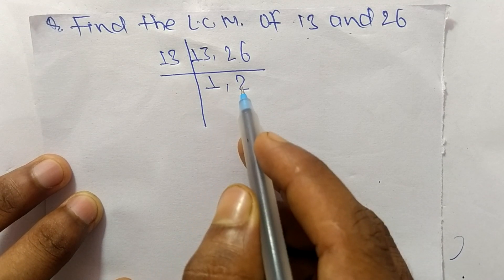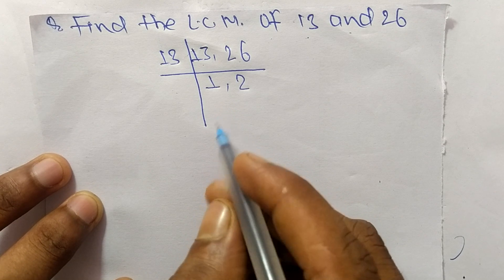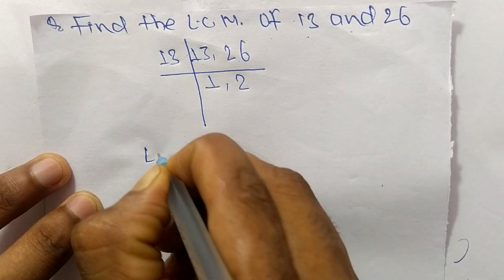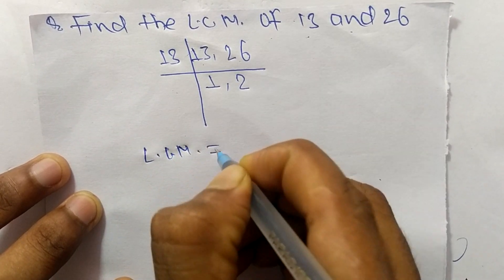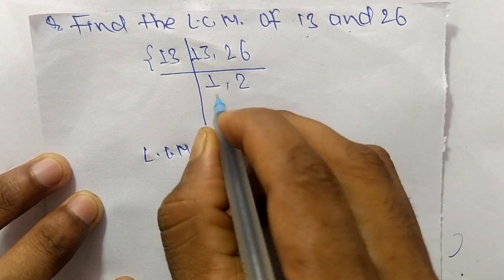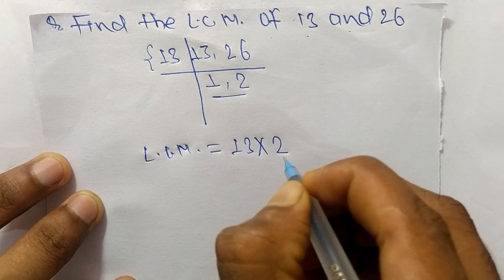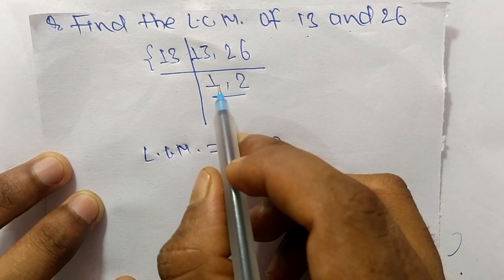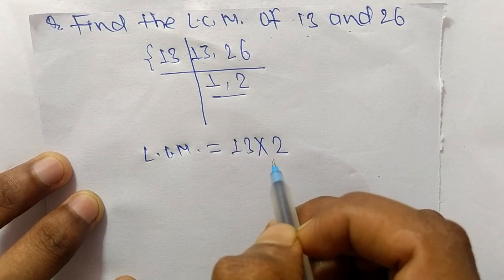Now we have 1 and 2, which are not exactly divisible by the same number. So the LCM is equal to 13 from this part and 2 from here. We neglect 1 because multiplying any number with 1 gives the same result.